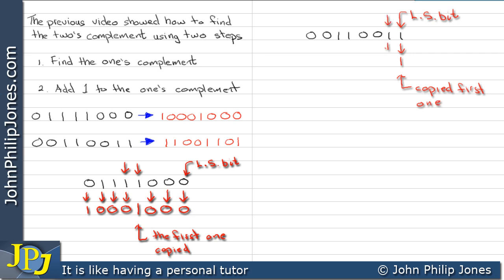you then invert the rest. That becomes a 0. This 0 becomes a 1. This 0 becomes a 1. This 1 becomes a 0. This 1 becomes a 0. And the last two 0s become 1s.